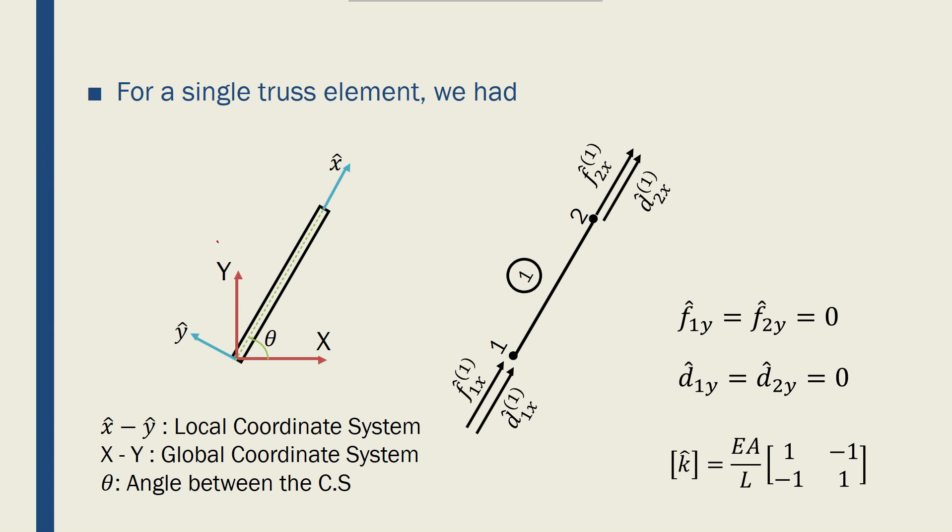So, if you remember, we had a truss element like this, and we said that we could have local coordinate systems, shown in blue, with x and y.